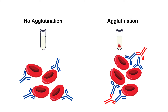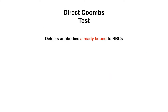Let's start with the direct Coombs test, which is basically detecting antibodies already bound to the RBC. This is something that already happens within the living organism, or in vivo. Because of this, think of a direct Coombs test as a diagnostic test, because the event has already happened and we're pretty much just trying to diagnose the disease.